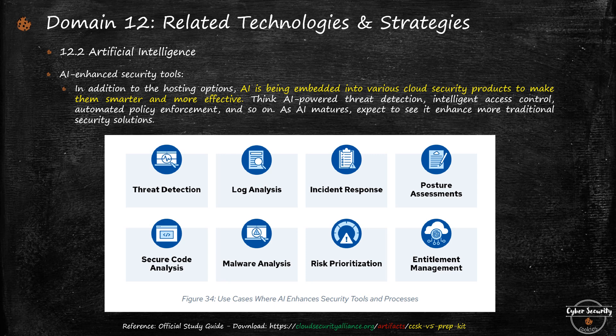The fourth category is AI embedded in security tools — a very important area. AI is being built into various security products to make them smarter and more efficient. Using machine learning models, these tools can perform threat detection, correlation, and even automated incident response via playbooks. They can do security posture assessment, source code analysis, malware analysis, risk assessment, risk prioritization across high, medium, and low risks, and entitlement management. AI is now being used across a wide range of security products.